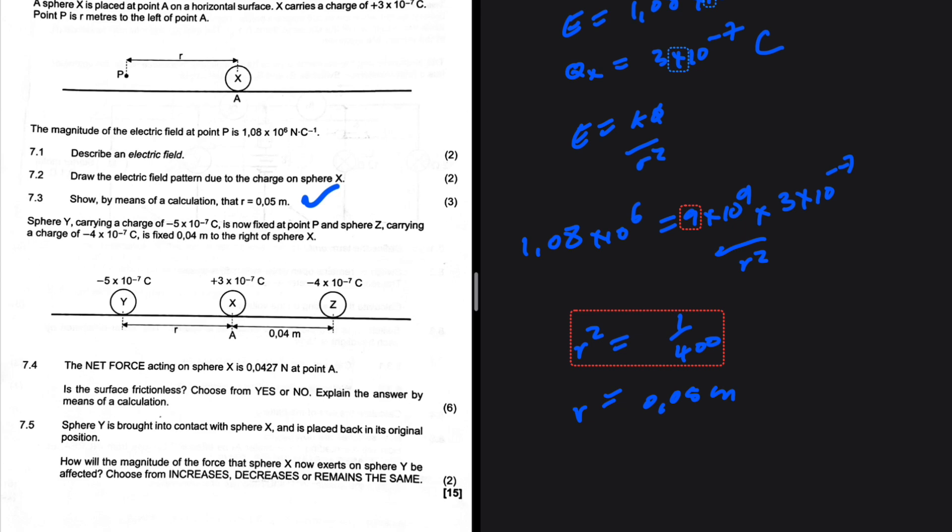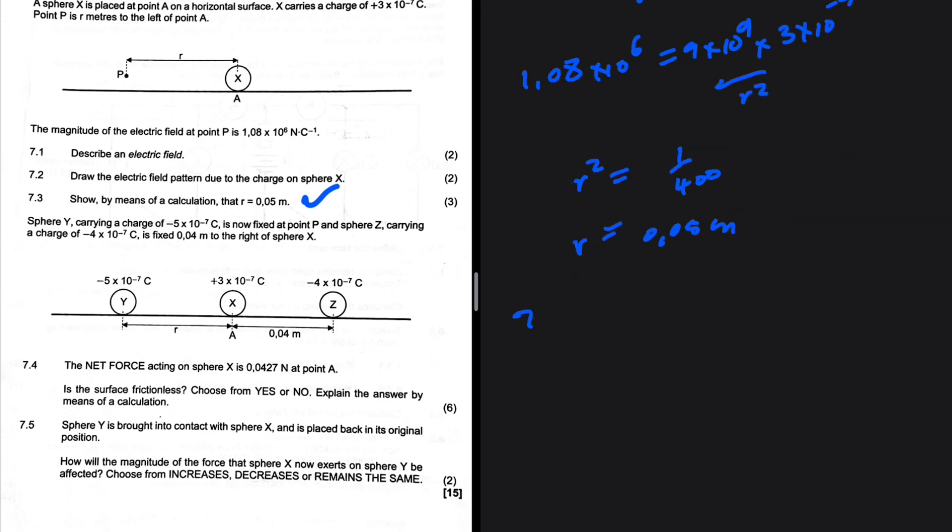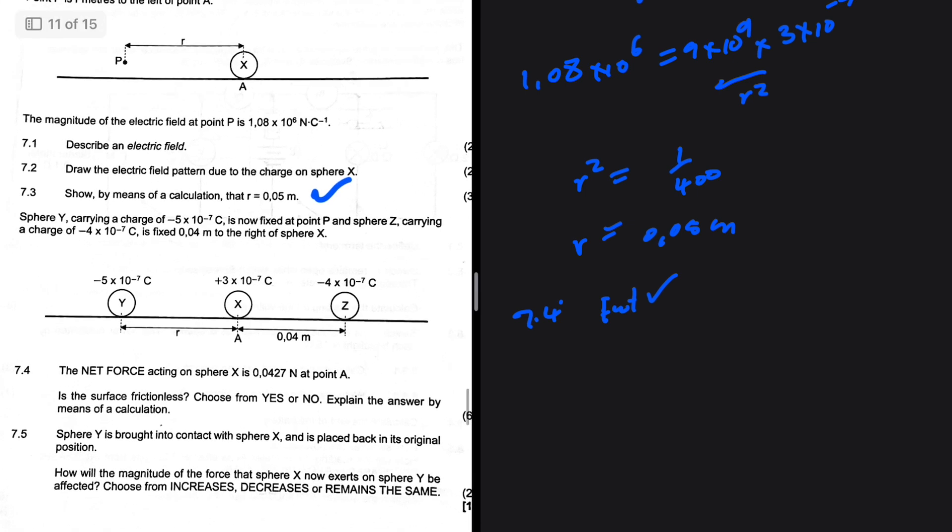So what is being asked? Is the surface frictionless? We're given the net force, which is 0.0427. The question is, is the surface frictionless? How can we determine that? We're given the charge of Y, we're given the charge of Z, and we're told that X is fixed in the question. If X is fixed, it's stationary, it means that it's not moving in either direction.